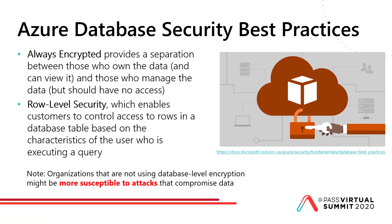For Azure database security best practices, Always Encrypted is a good option as it provides separation between those that own the data and those who can view it. Row-level security lets you adjust, on a table-by-table basis, what rows are returned based on who is executing a query. Note that if you're not using database-level encryption, you're susceptible to attacks that could compromise your data.